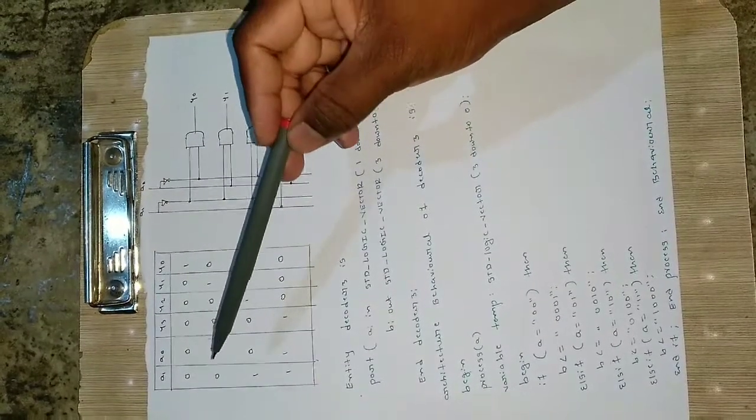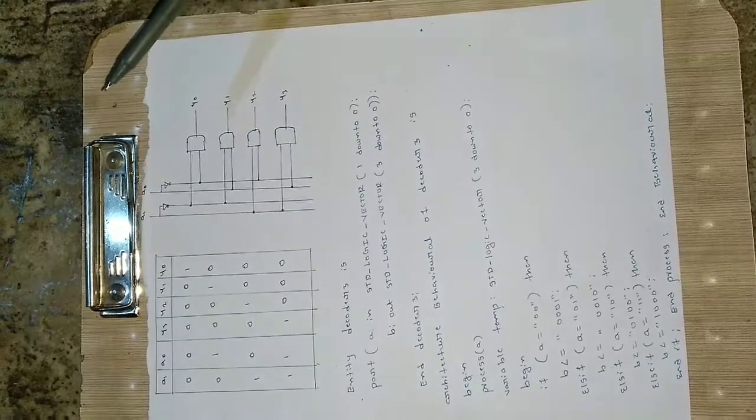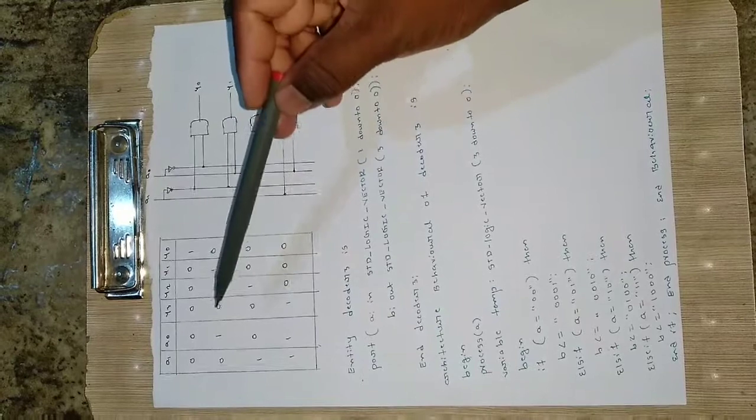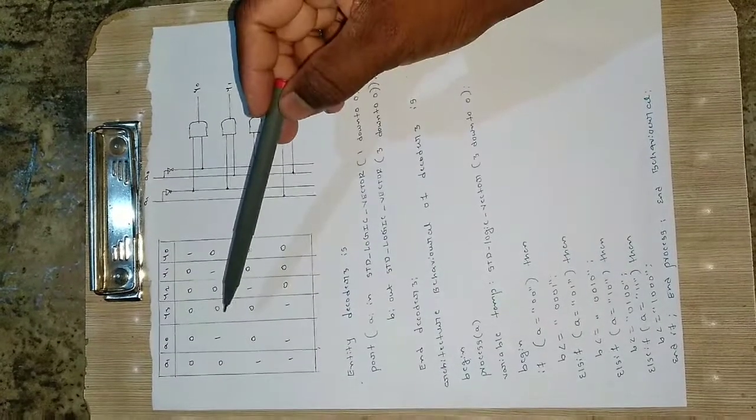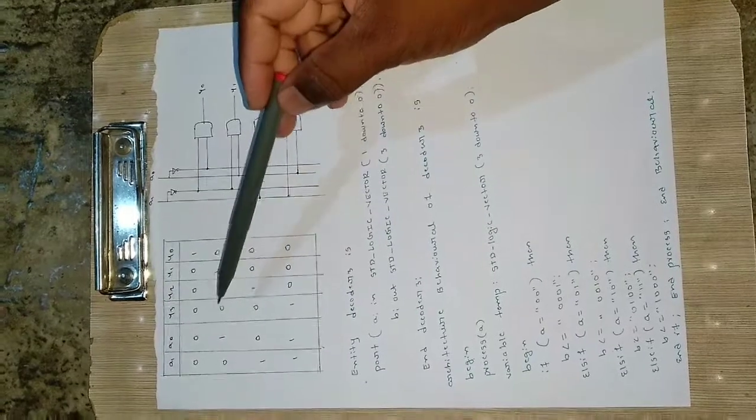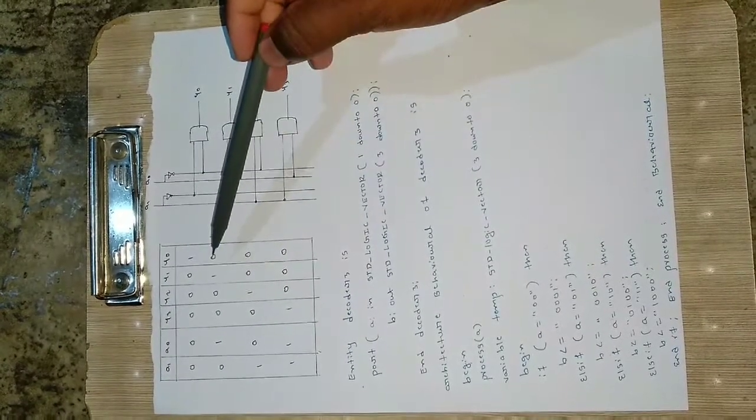Similar thing is done for the others. So if it is 0 1, it means in decimal it is 1. So when you convert it to binary it will be like 0 1, and for that reason the 1st bit, that is the y1 bit will be high, and others y3 y2 and y0 will be 0.